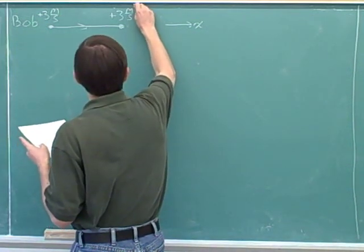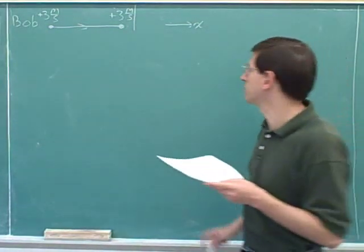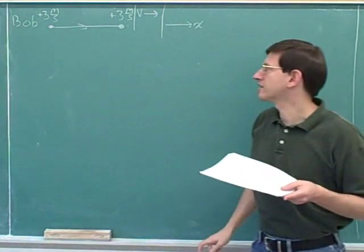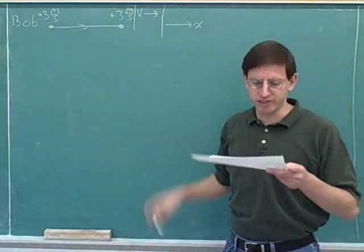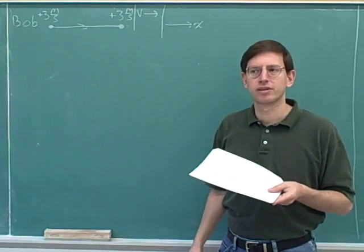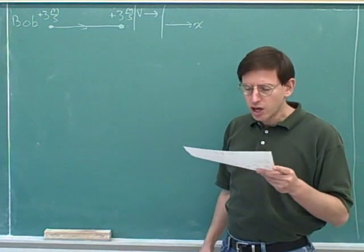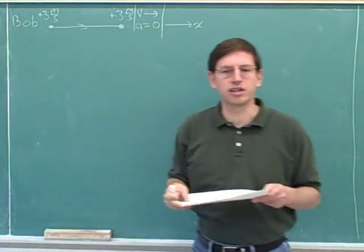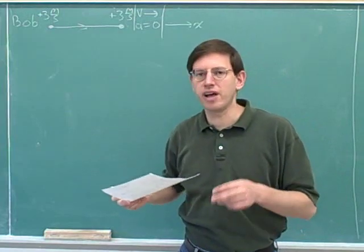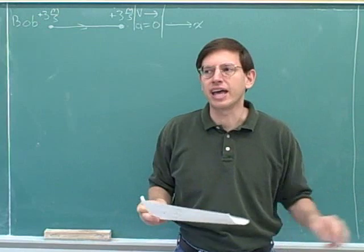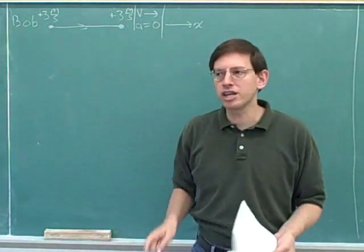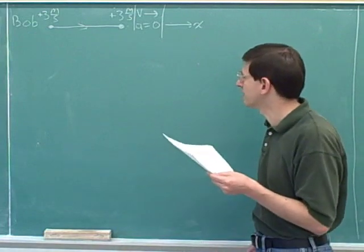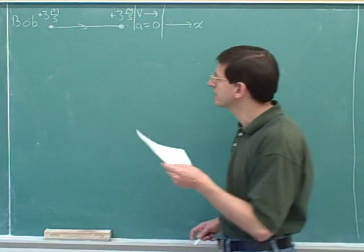We want to get into the habit of drawing velocity and acceleration vectors. Bob's velocity vector is pointing to the right since he's moving to the right. What's Bob's acceleration? We need to be very comfortable with the idea that at constant velocity, your acceleration is zero — because the acceleration tells you how the velocity is changing. So if the velocity is not changing, the acceleration is zero. That's very important to be familiar with.